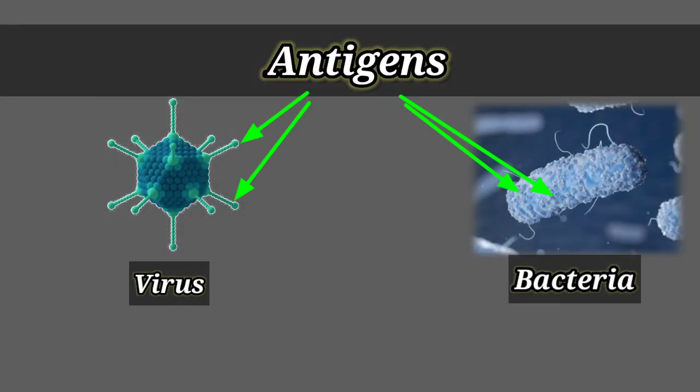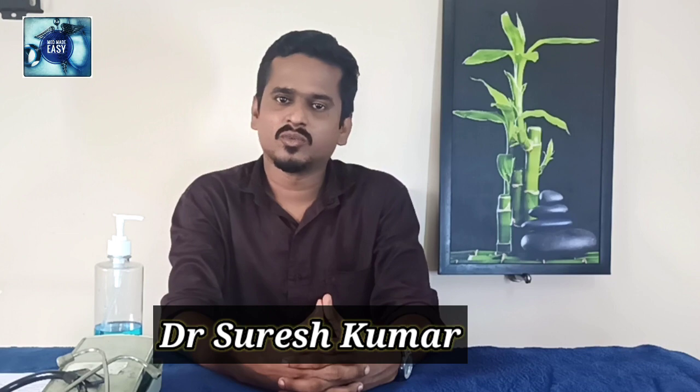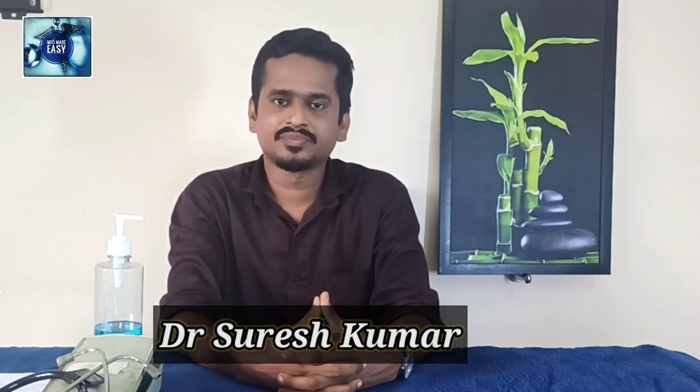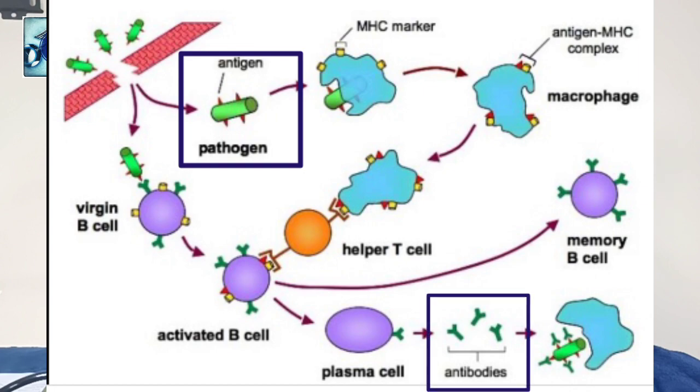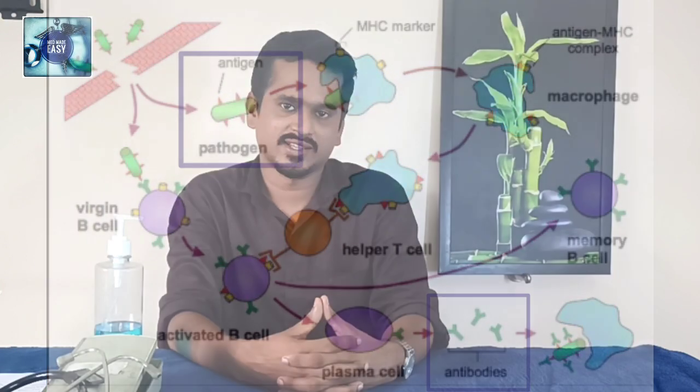Every pathogen like viruses, bacteria, and fungi have got a unique identity mark in them called antigens. Because of this antigen, our body identifies it as either foreign body cells or self cells. If our body recognizes it as a foreign body or non-self antigen, the immune system through complex processes produces antibodies against these pathogens, and these antibodies fight these cells.